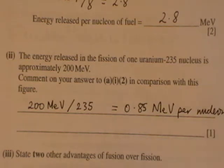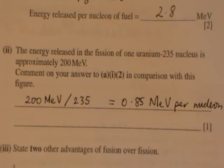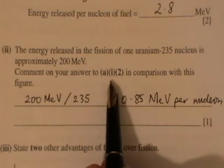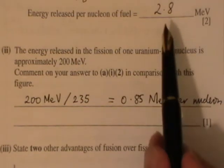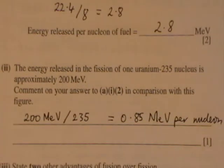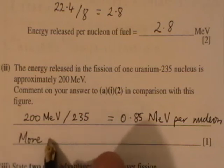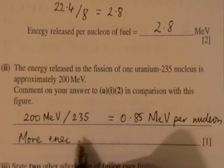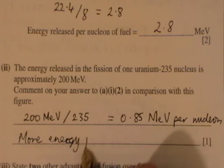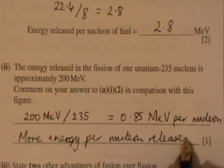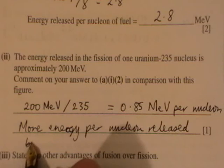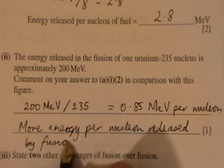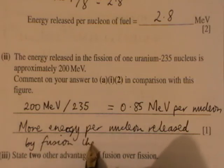And therefore, what we find is that the answer to part A is bigger: it's 2.8 compared to the 0.85. So, there's more energy per nucleon released by fusion compared to fission.